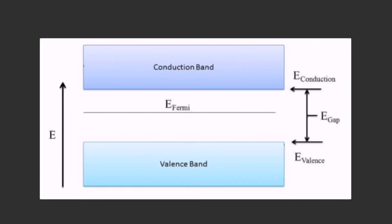Basically, this band gap is nothing but the particular energy which is required to get the electron free. With further increase in temperature, more electrons from the valence band move to the conduction band. This is how intrinsic semiconductors conduct.